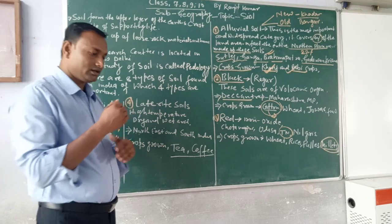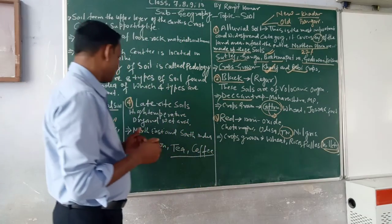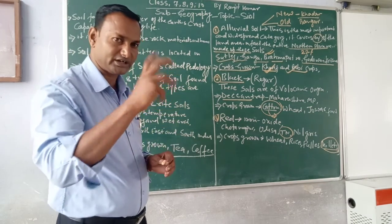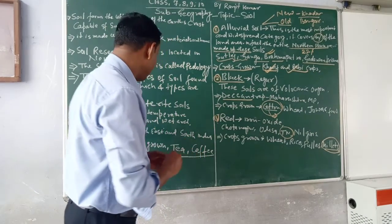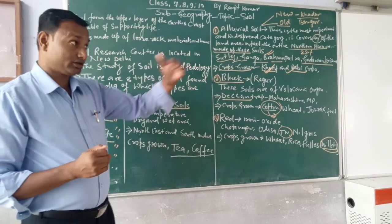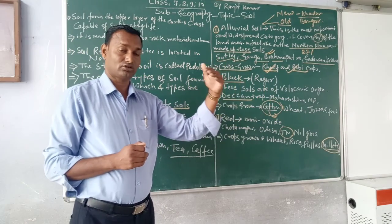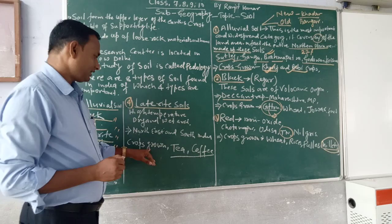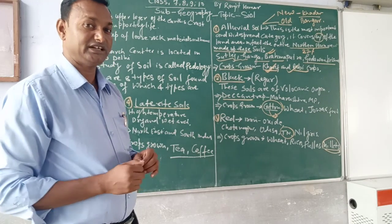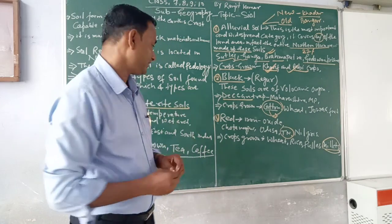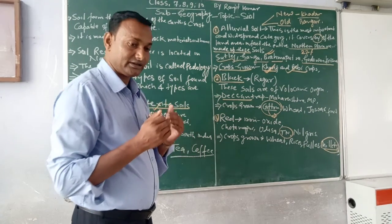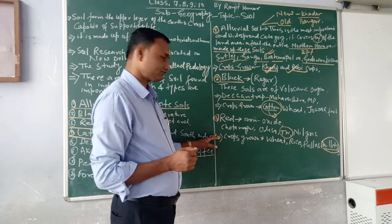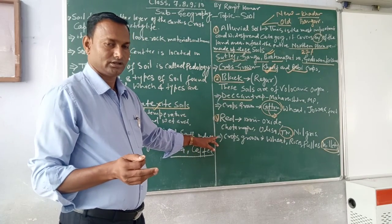The fourth type is Laterite soil. It is found in areas of highest temperature, dry and windy conditions, with moderate climate, in northeastern and southern India. Major crops grown in Laterite soil are tea and coffee. So, there are four main types of soil discussed today. Thank you.